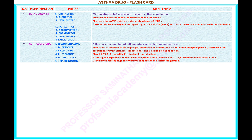Mechanism of corticosteroids: decrease the number of inflammatory cells — anti-inflammatory. Induction of annexins in macrophages, endothelium, and fibroblasts. Inhibit phospholipase A2 and decrease the production of prostaglandins, leukotrienes, and platelet-activating factor. Block COX-2 inducible prostaglandin production. Alters gene expression, decreasing the production of interleukins 1, 2, 3, 6, tumor necrosis factor alpha, granulocyte-macrophage colony-stimulating factor, and interferon gamma.